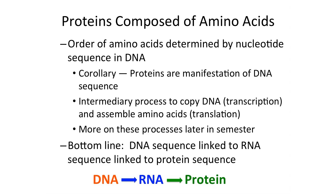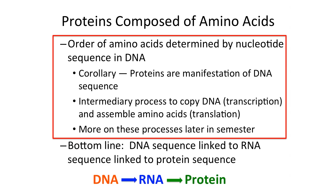Amino acids are the key components in proteins. Proteins are basically a polymer of amino acids that is determined by the order of the nucleotides in DNA. To flip that, proteins are a manifestation of DNA sequence — they are the physical manifestation of DNA sequence.